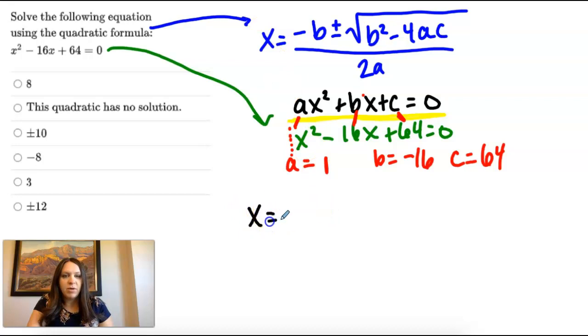So I'm going to rewrite the quadratic formula, but I'm going to replace a, b, and c. So I have negative, and then b is negative 16. Plus or minus, square root, b squared, but b is negative 16. So I'm replacing b.